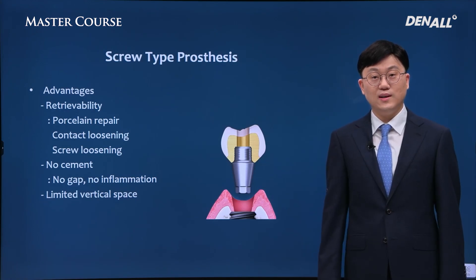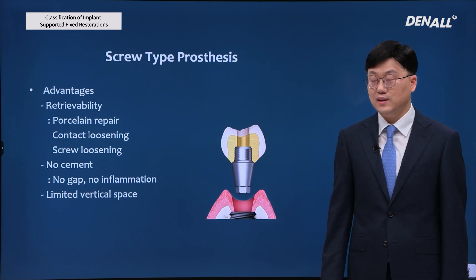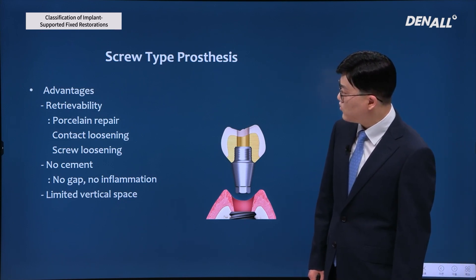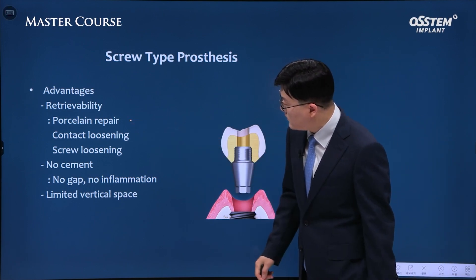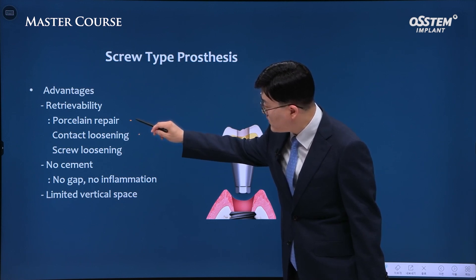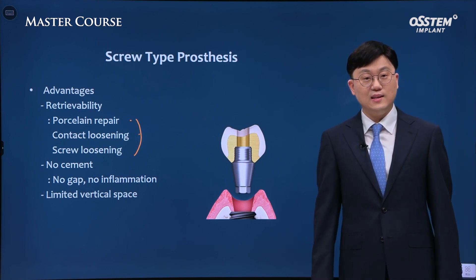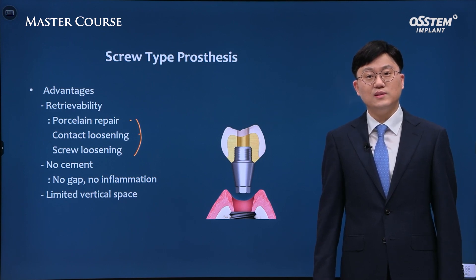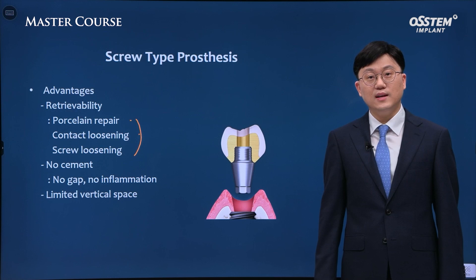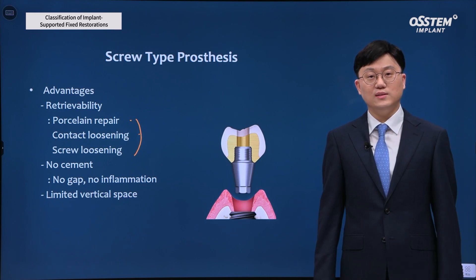The advantage of screw type is that using the hole, the screw can be untightened and the prosthesis can be removed — retrievability is ensured. For instance, if you need to repair porcelain, if there is screw loosening, contact loss, or need for repair, you can actually do it. Because cement is not used, there is no gap, meaning there will be no inflammation. Also, since cement is not used and the parts are made into one, this can be utilized when vertical space is limited.